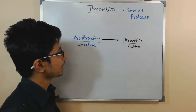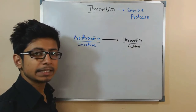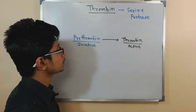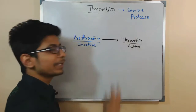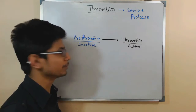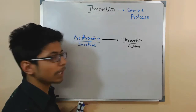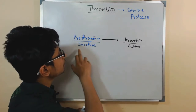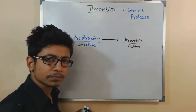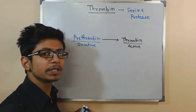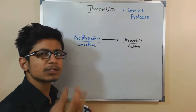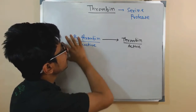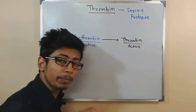Prothrombin is a soluble type of protein, while thrombin is a fibrous, insoluble type of protein. In our blood plasma, prothrombin is present in soluble form, but once it is converted into thrombin it is no longer soluble — it becomes insoluble. Once thrombin is formed, it helps to create blood clots in wound regions.